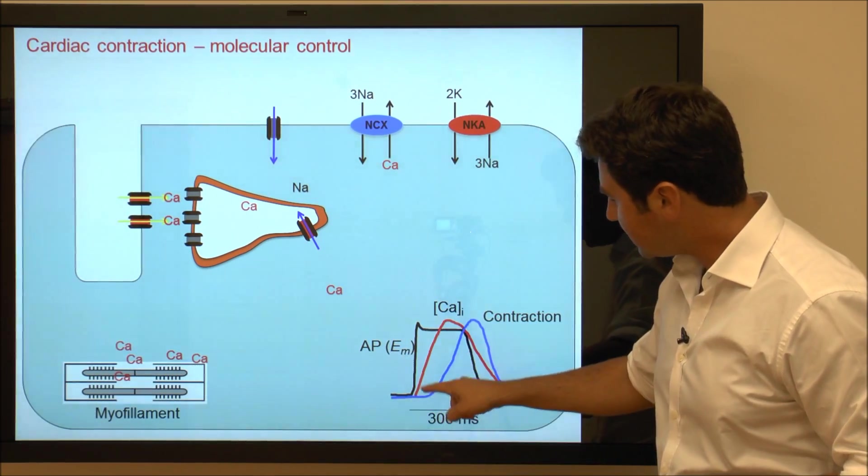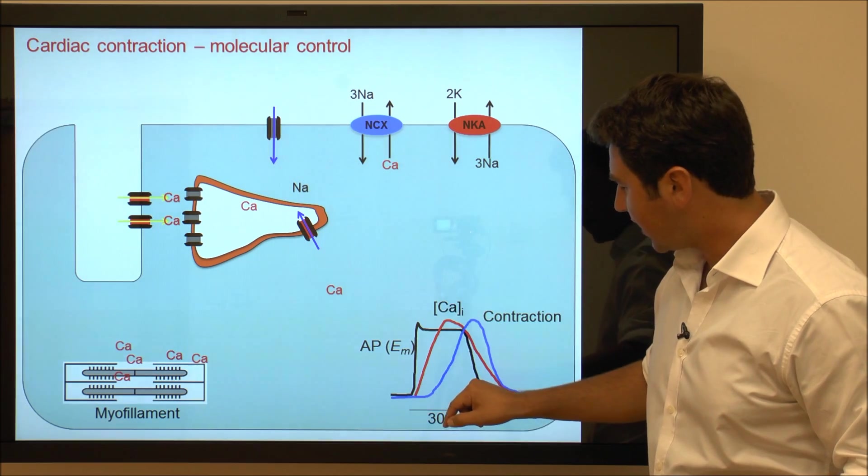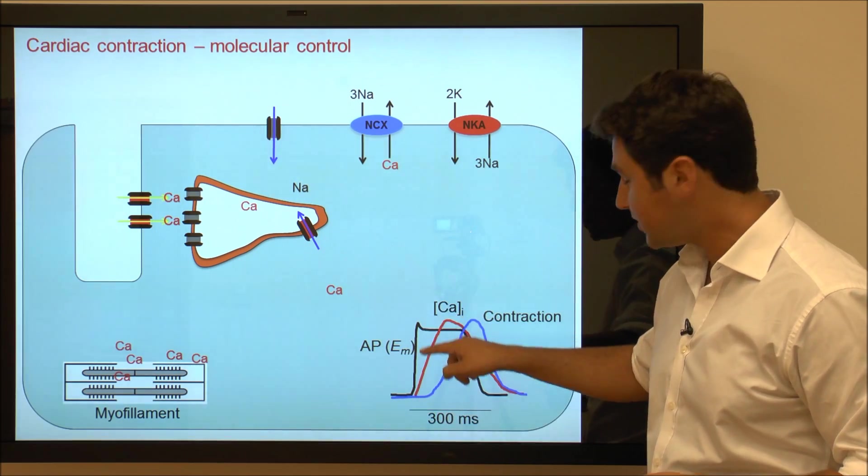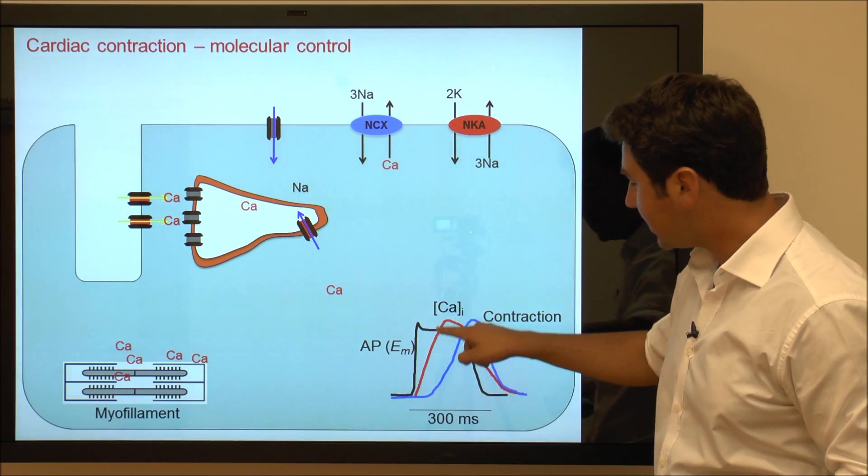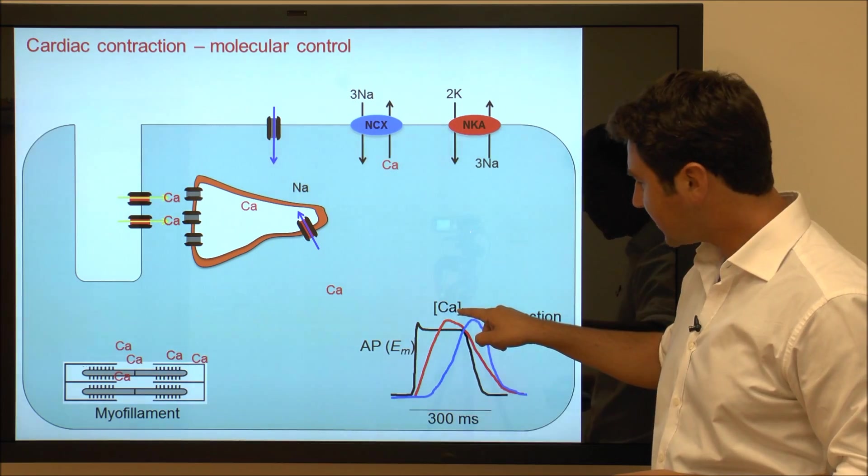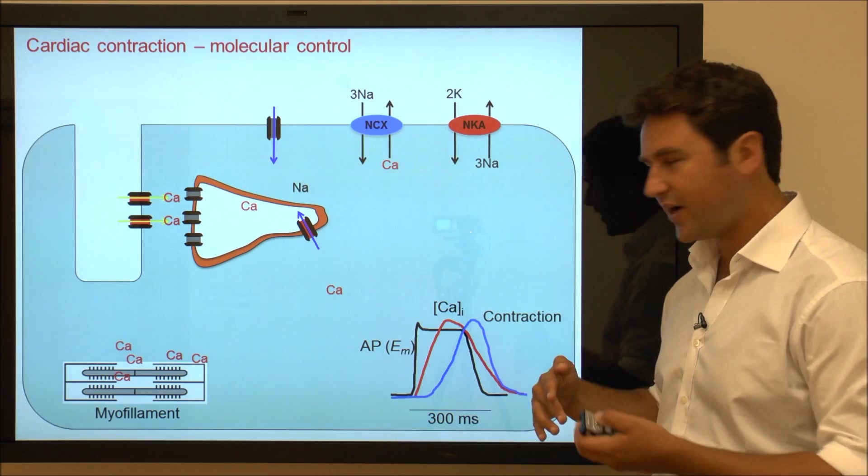As we increase our membrane potential, we actually get a sudden influx of calcium in the cytosol which is then followed by a contraction.